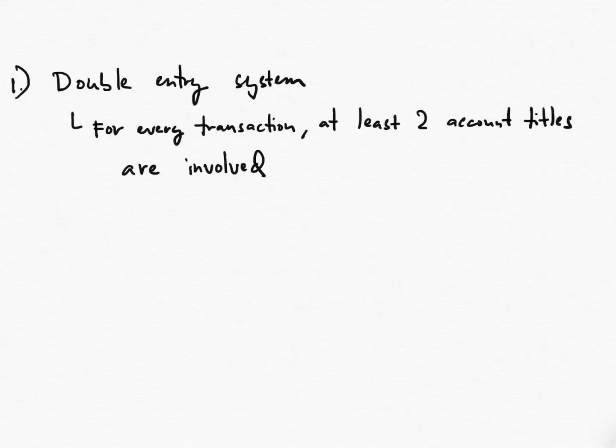So the first concept is the double entry system. This concept states that for every transaction, at least two account titles are involved. When we say transaction, we are referring to business transactions, meaning events that have to do with the business. For example, the owner investing cash in the name of the business or the business getting a loan from a bank. It's not like when the owner asks someone to date him or her or the owner going to the park with his or her family. Those are transactions, but they are not business related.